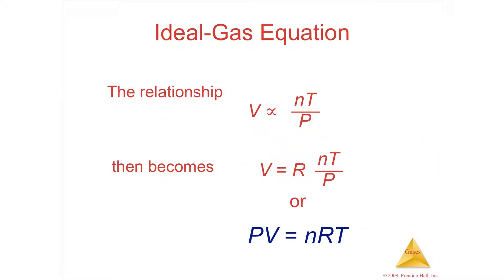In order to make an equal sign out of proportionality, I need some kind of a constant, and we're going to call that constant R. If I have V equals R n T over P, just to make it a little easier to see, it's going to be PV equals nRT.